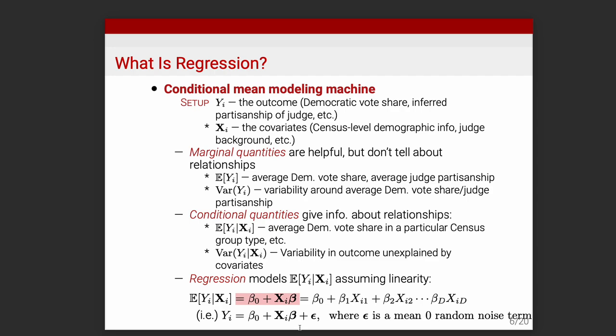When papers say a variable is a good predictor of something, that's related to what regression is doing. Some variables are more correlated with the outcome than others. Imagine iterating over variables v1, v2, v3 and plotting each against war. If as you change v1 the expected level of war doesn't change, that's not a great predictor. If the coefficient isn't statistically different from zero, that tells you something.